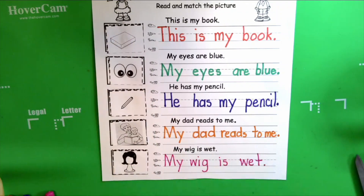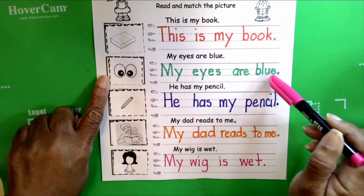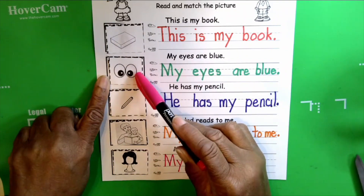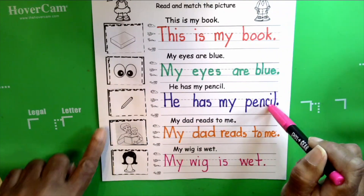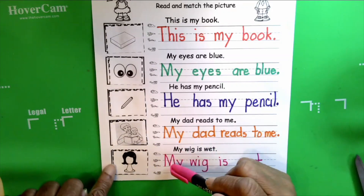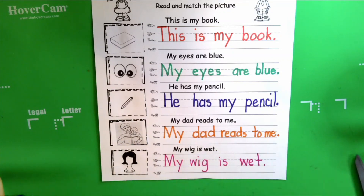Very nice, boys and girls — we did it! Take a look: this is my book; my eyes are blue — remember, we have to color the eyes blue because we told the reader they're blue; he has my pencil; my dad reads to me; my wig is wet. Very good, boys and girls. Now, time to do what? Color the pictures! I'm going to fast forward the video and I'll be right back.